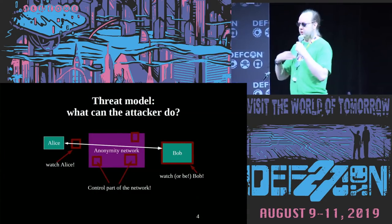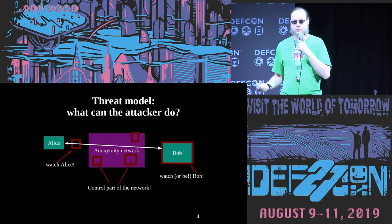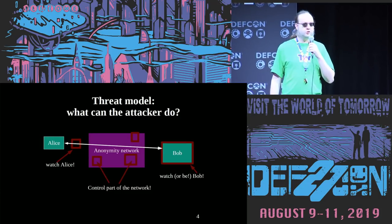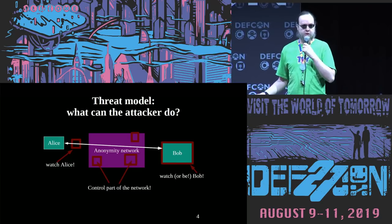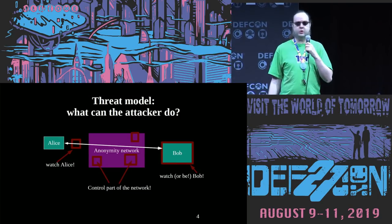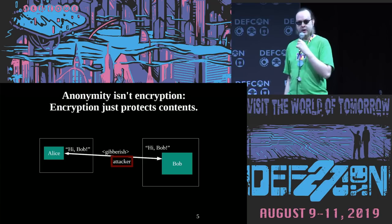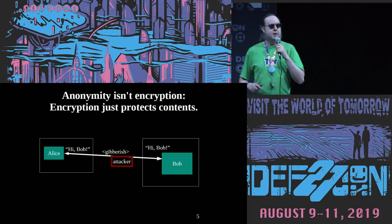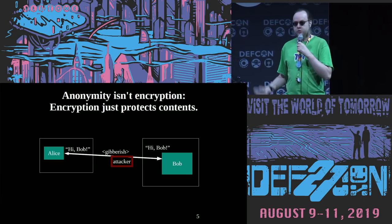So what are we trying to do here? The threat model: we've got this user Alice. She's trying to go to some website or service Bob, and somebody is trying to learn who is going to which place. Maybe somebody's watching Alice's local network connection — maybe that's somebody spying on the Starbucks, maybe that's Comcast or the local telco. Or maybe they're watching on the Bob side, watching WikiLeaks to know who's connecting to it. Or maybe they're somewhere in between — the NSA or AT&T. This is the scenario we're trying to think about. Anonymity is not encryption. You should use encryption — encryption is good. But even when you're using encryption, somebody watching your traffic gets to learn who you're talking to, when you're talking to them, how much you're talking to them.